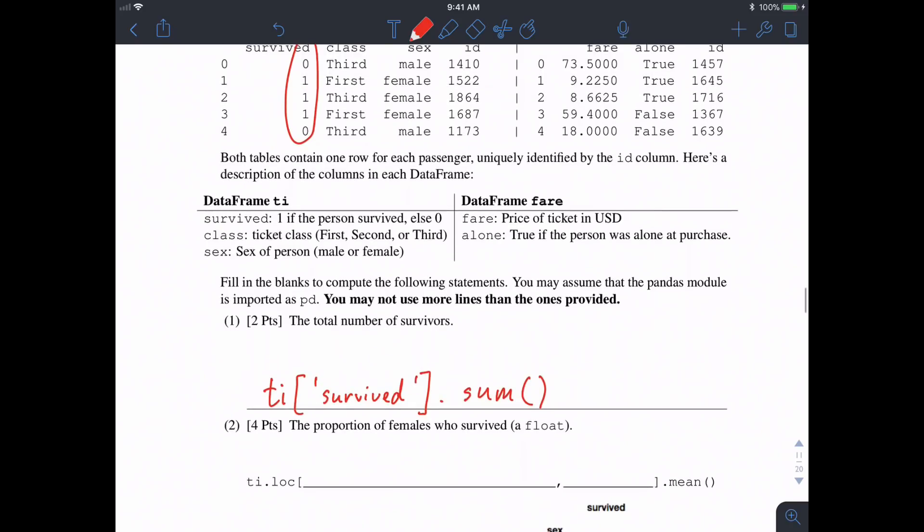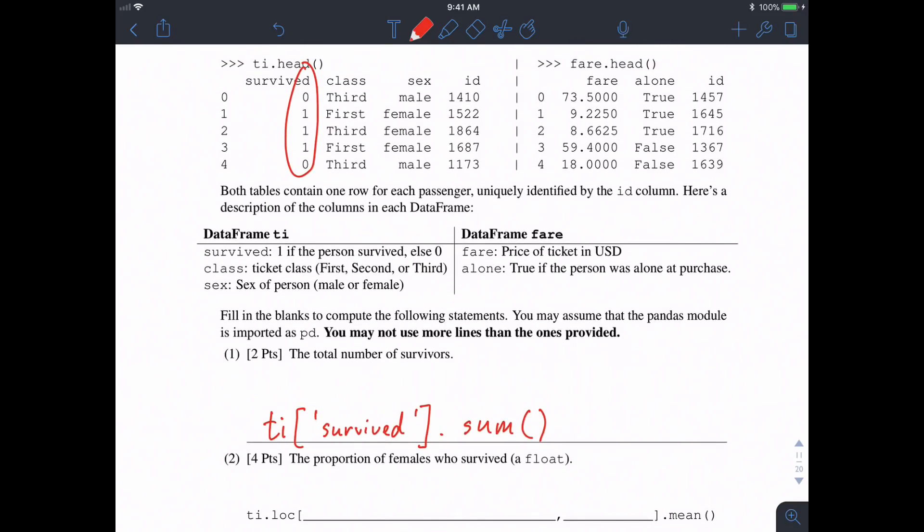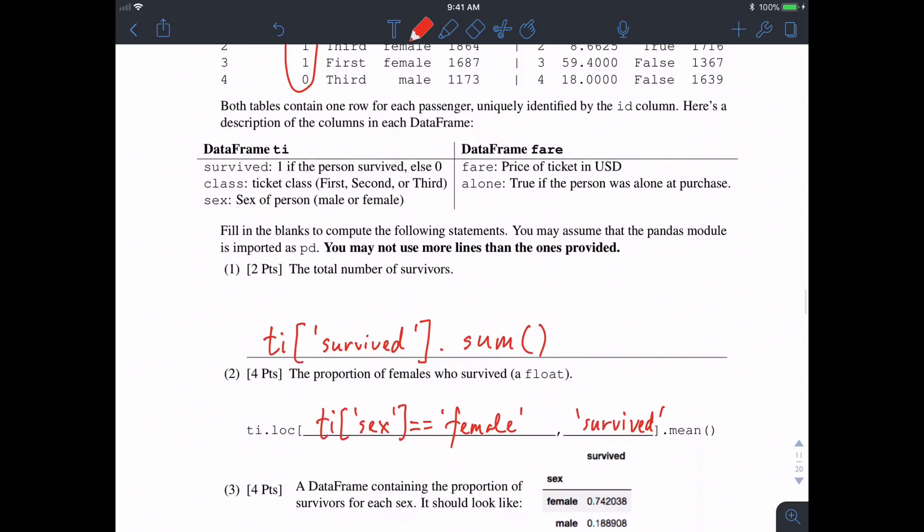In two, we want the proportion of females who survived. So it's very similar to what we did in the first one, but we need to filter out sex to be female. And instead of summing, we'll take the mean, because summing will tell us the number of survivors, the mean will tell us the proportion or the fraction between 0 and 1. So we'll do a loc, where TI at sex is equal to female, and we want the survived column, and take the mean of that.